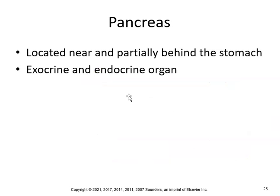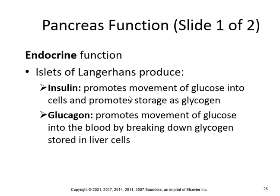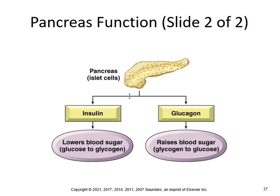The pancreas is located near and partially behind the stomach and is both an exocrine and endocrine organ. Its endocrine function involves the islets of Langerhans, which produce insulin — promoting movement of glucose into cells and storage as glycogen — and glucagon, which promotes movement of glucose into the blood by breaking down glycogen stored in liver cells. Insulin lowers blood sugar and glucagon raises blood sugar. The pancreas works hard to maintain a steady blood glucose level; a fasting blood glucose of 140 or 150 is a little high — we like to keep it under 100.